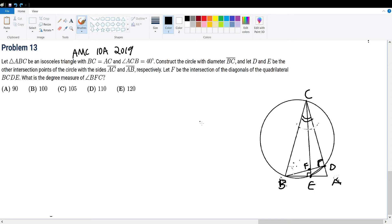AMC 10A 2019 problem 13. We're given all those criteria in the geometric shapes and we're trying to find angle BFC.